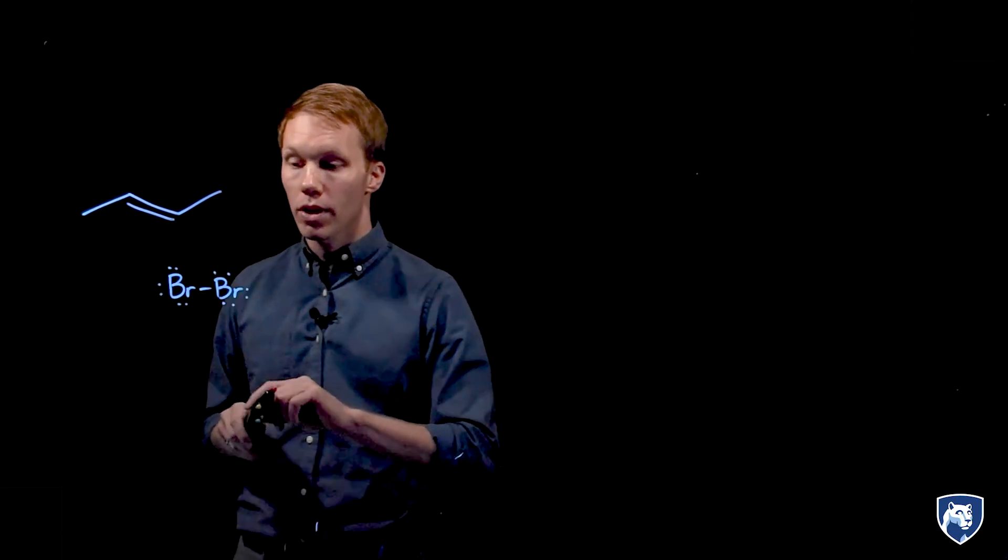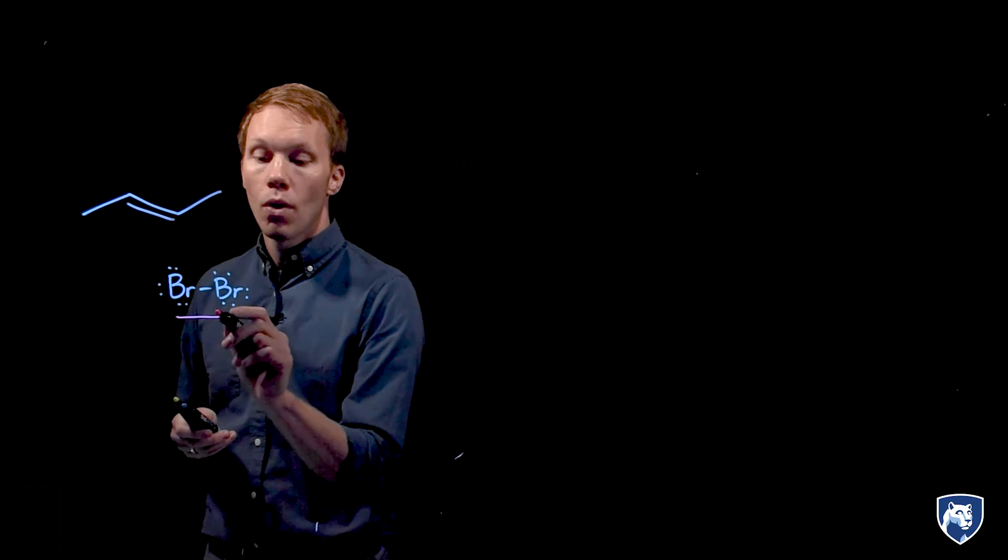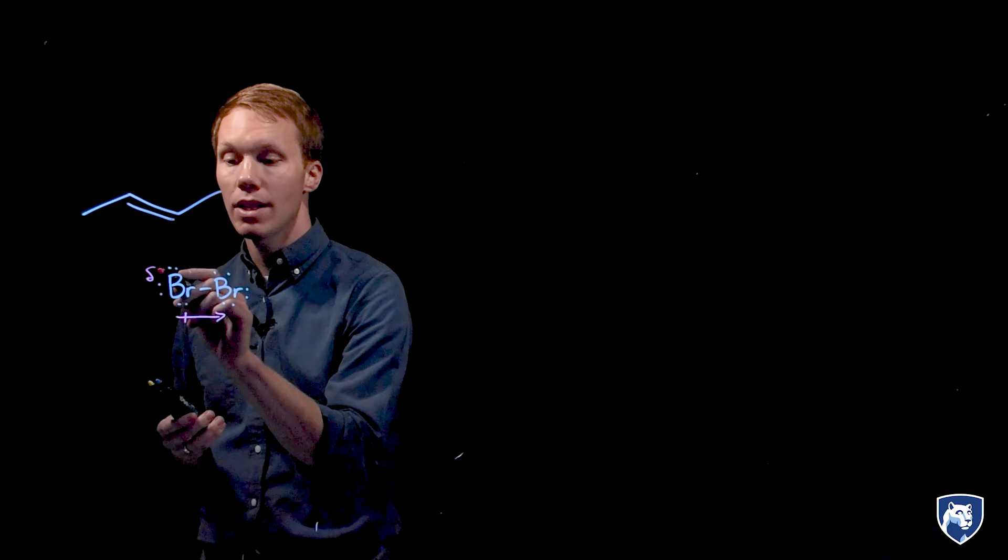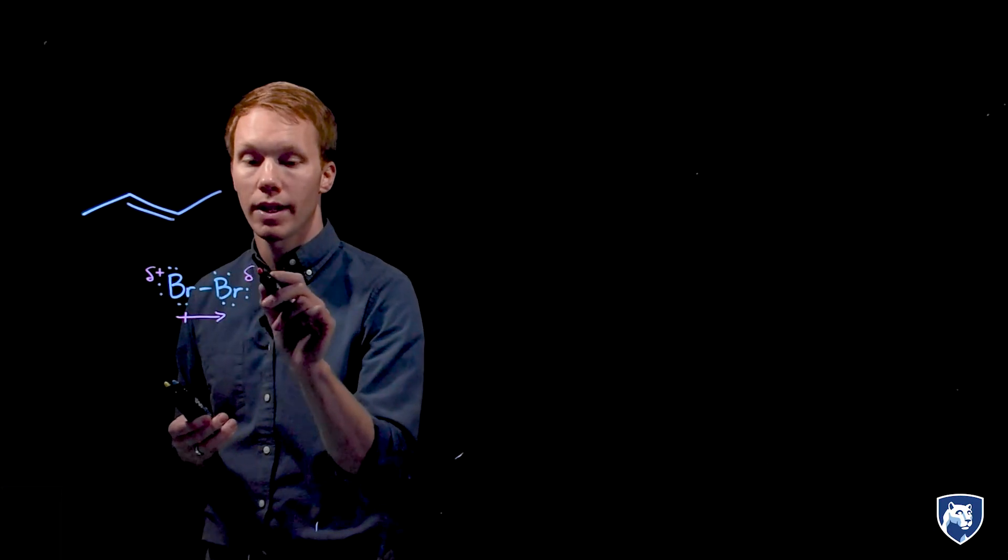This reaction involves combining an alkene with a halogen. The electron rich pi bond will serve as our nucleophile here and bromine will serve as the electrophile. While bromine is nonpolar it can develop an instantaneous dipole and we can indicate those partial charges using the Greek letter delta.